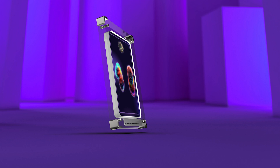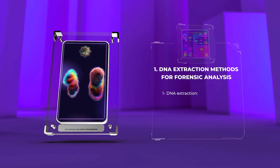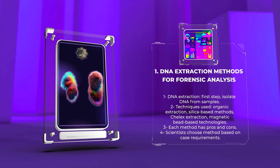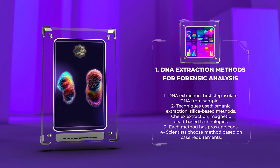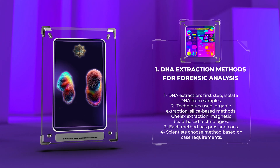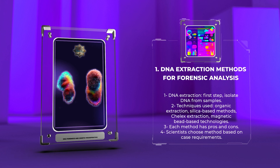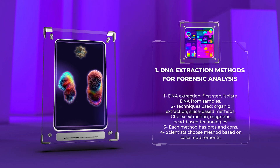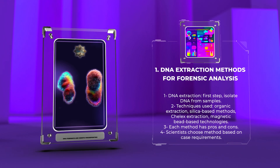In DNA forensics, DNA extraction is the first step to isolate DNA from samples. Techniques like organic extraction, silica-based methods, Chelex extraction, and magnetic bead-based technologies are used to remove contaminants and purify DNA for further analysis. Each method has its pros and cons, so scientists choose based on case requirements.